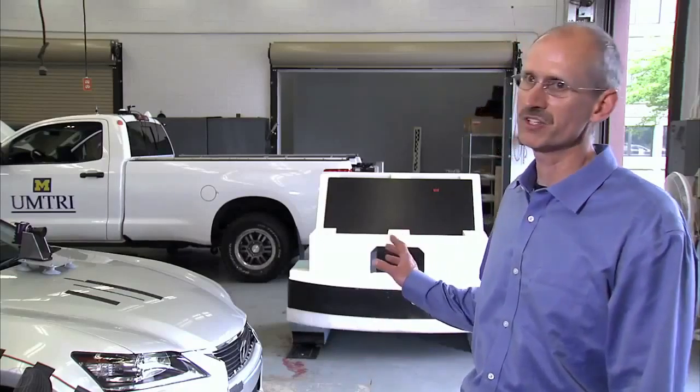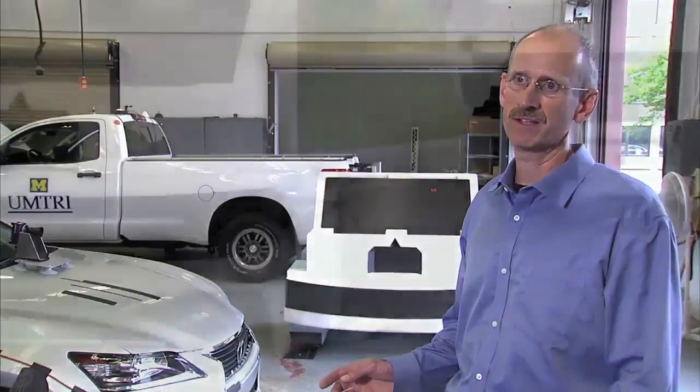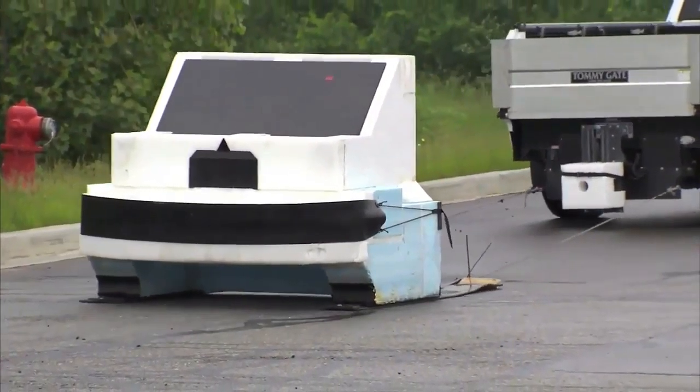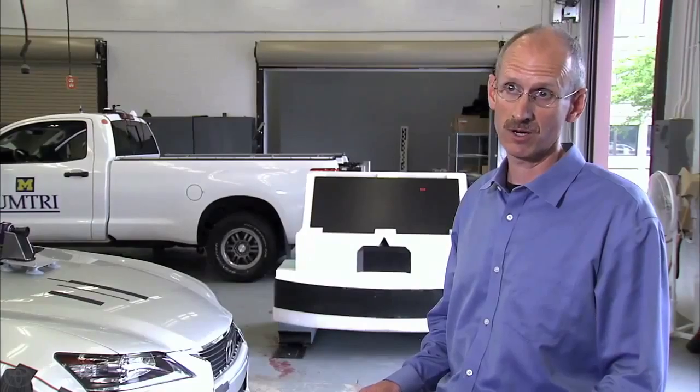So this is our surrogate target which is a fake car that can be hit at speeds up to 30 or 35 miles an hour. It looks like a real car to a radar.